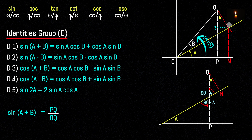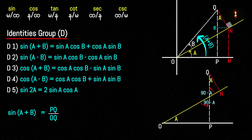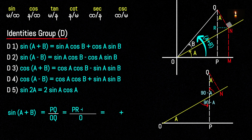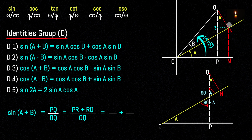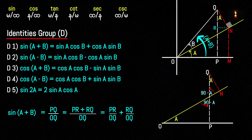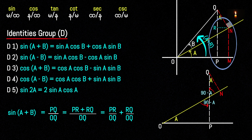So generally, sin(A+B) = PQ divided by OQ. We know the construction line is the same as the PQ line where R is on C. PQ equals PR plus RQ, and this is the same as PQ equals PR plus RQ plus RQ — that is, PQ equals PRNM.